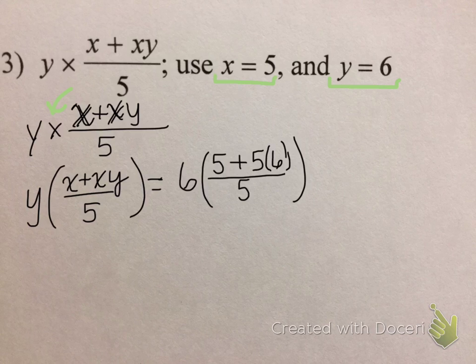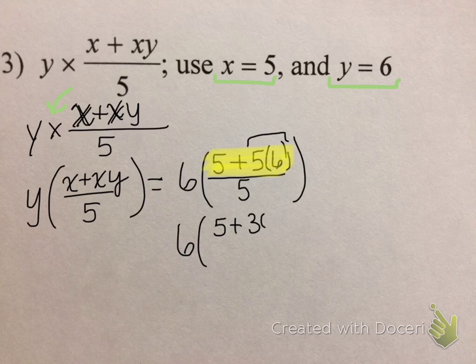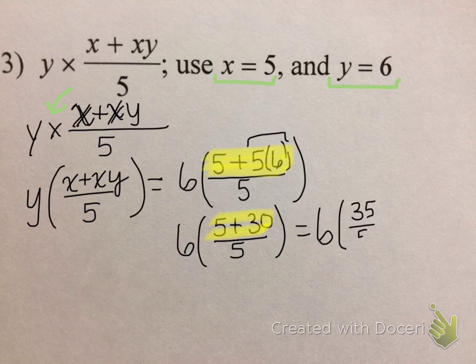Now once you're at this step, remember when we did fractions before, it's kind of like a problem within a problem. When you see this numerator here, or the top, we need to simplify that first. To do that, we need to follow PEMDAS. There's no parentheses, there's no exponents, so the next step would be multiplication, which we have right in here. So this becomes 6 times 5 plus 5 times 6 is 30 over 5. We must simplify that numerator as much as possible before we move on. So we have 5 plus 30, which is 35.